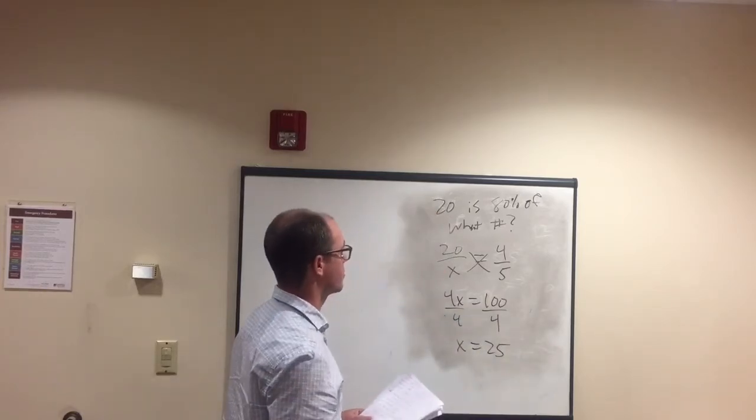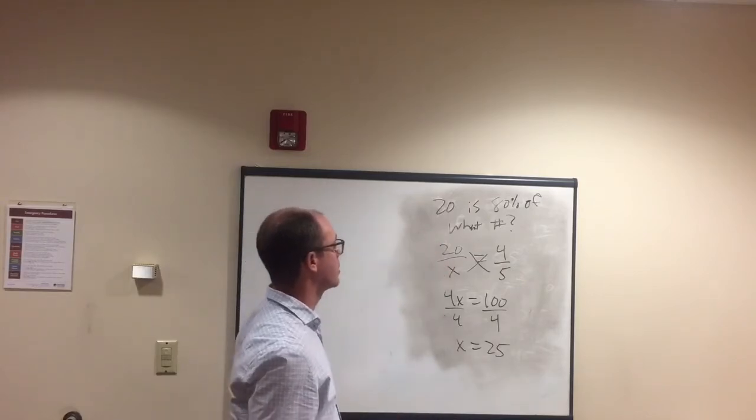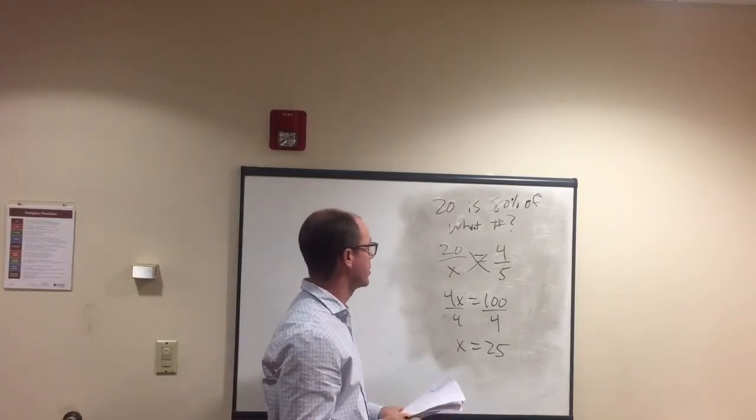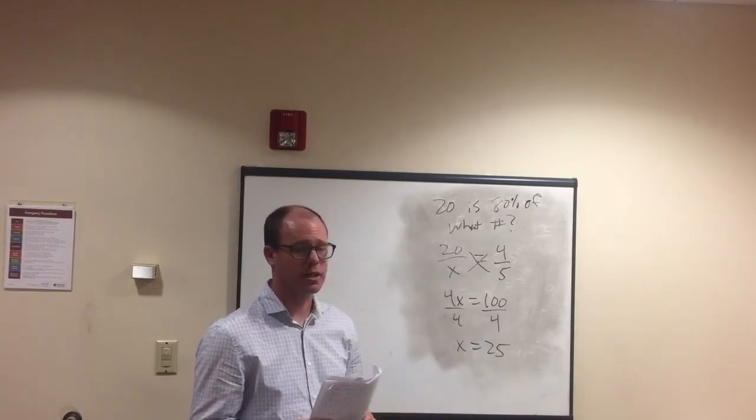x equals 25. 100 divided by 4 is 25. 20 is 80 percent of 25, and we solve that by setting the equation up just like that.